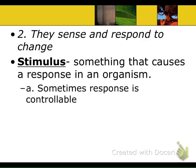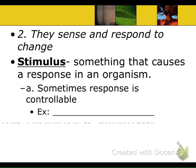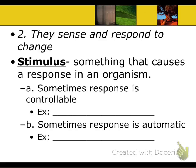Sometimes the response to a stimulus is controllable—you can choose what to do. If you start getting hot running a mile on a 100-degree day, you can choose to get a drink of water or sit in the shade. But sometimes responses to stimuli are uncontrollable. Nobody in here can control when they sweat—it's automatic. When body temperature starts to go up, your body releases sweat to cool itself back down. You don't control that; it just happens.